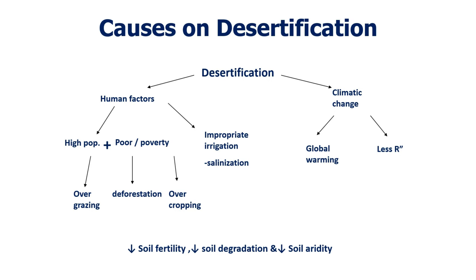Now we discuss the causes of desertification. There are two main causes: human factors and climate change. Human factors arise when human population increases, especially among the poor. High populations of herbivores lead to overgrazing, which reduces vegetation. With less vegetation, there is gradually more soil loss due to wind erosion or water erosion, leading to desertification.